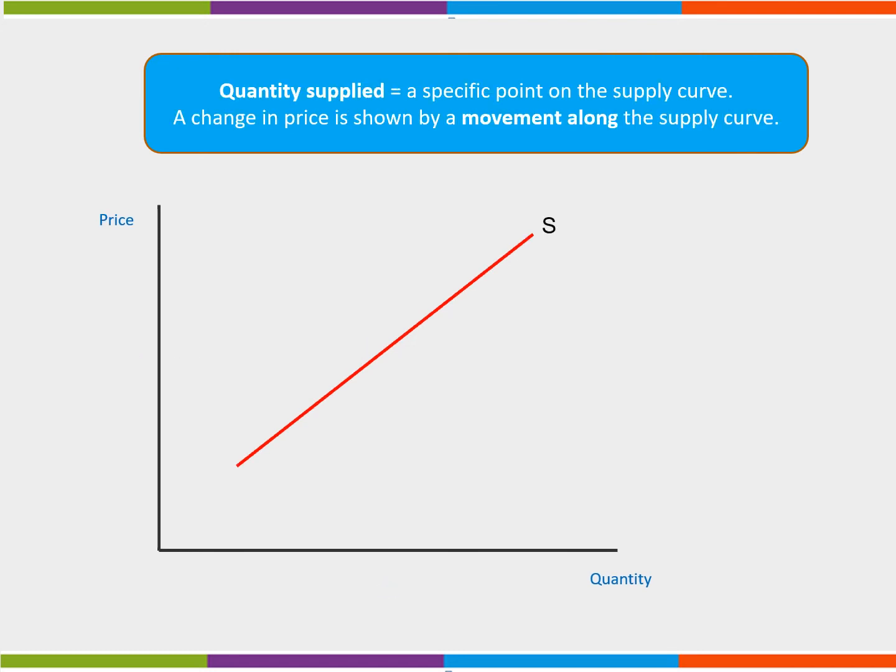In economics, when we talk about supply, we are looking at the entire supply curve. When we talk about quantity supplied, we are looking at a specific point on the supply curve, which corresponds to a specific price.